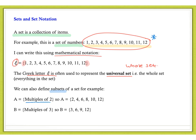B is another subset of our original set. It's multiples of 3 from our original set here. And so, B is equal to the set of numbers 3, 6, 9 and 12. Subsets are themselves sets because they're simply a collection of numbers or a collection of items from our original set.